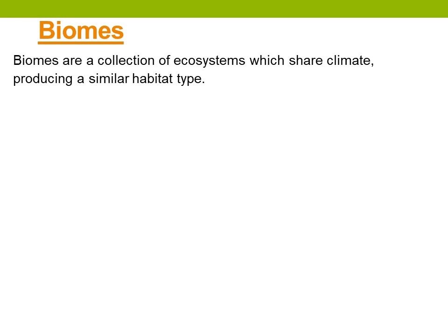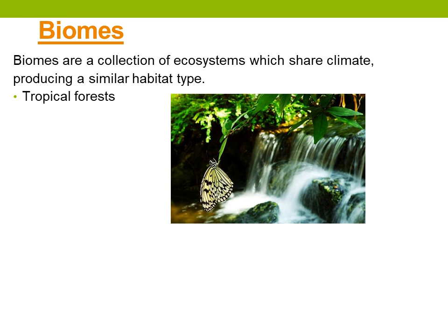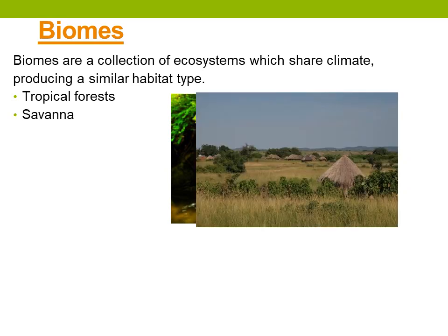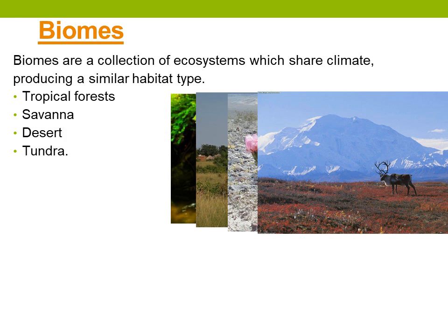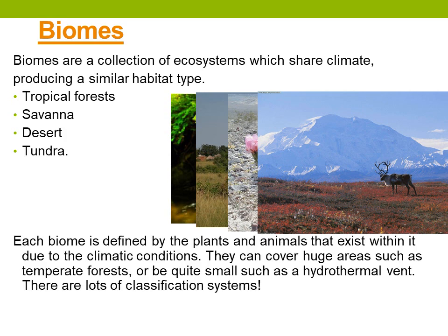The last thing to mention is biomes. Biomes are a collection of ecosystems which share a climate and produce a very similar habitat type. Tropical forests, savannah, desert, and tundra all have their own biomes. Within each of these examples we're going to see lots of different ecosystems with similar features to each other. They can cover large areas — a whole continent for example can be covered by a tropical rainforest — and within that you will have large numbers of different types of ecosystems with overlapping similar features.